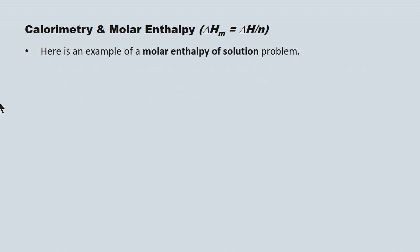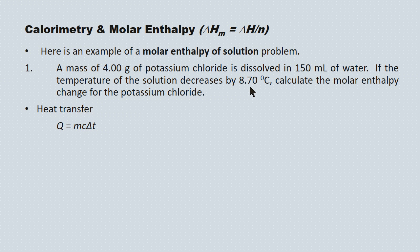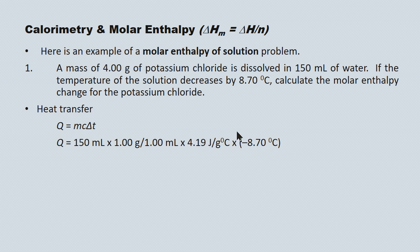Here's an example of a molar enthalpy of solution problem. If you have 4.00 grams of potassium chloride dissolved in 150 mL of water and a temperature decrease of 8.70 degrees Celsius, calculate the molar enthalpy change for the potassium chloride. The first step is similar to heat transfer problems — we determine the energy change for the surrounding water. We're dealing strictly with the 150 mL of water; the potassium chloride is the system and doesn't factor into the heat transfer calculation.